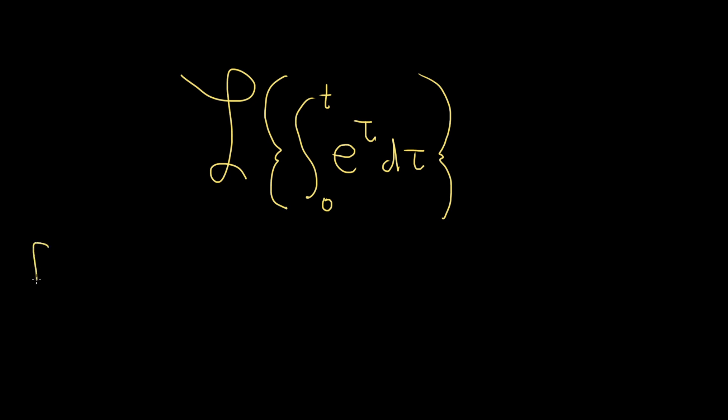So recall if you have two functions f and g, and you compute the convolution, this is defined to be the definite integral from 0 to t. So already you see how it's kind of matching, right? We've got the 0, we've got the t, so we're getting there.